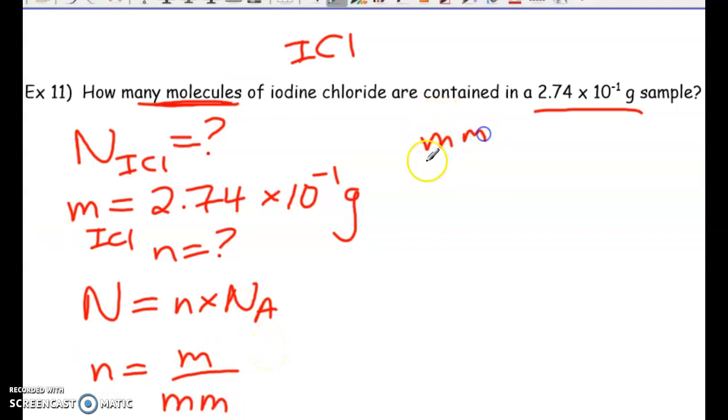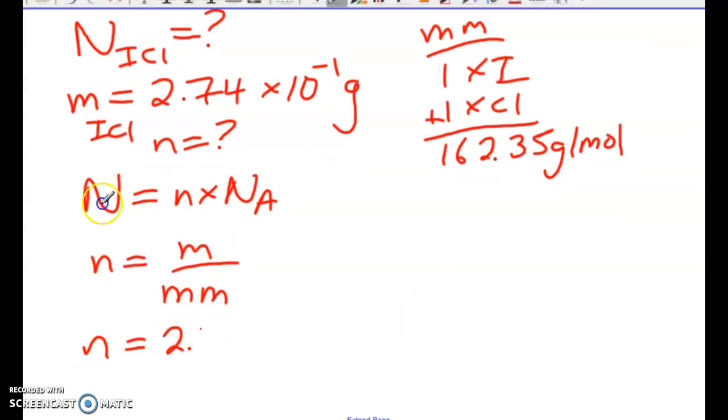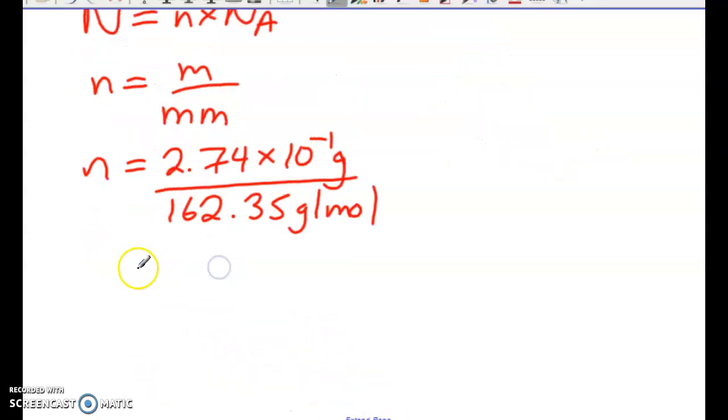So molar mass, we have 1 iodine, 1 chlorine. So we get a molar mass of 162.35 grams per mole. So we have mass over the molar mass. So we're going to solve for our mole value. So 2.74 times 10 to the negative 1, divided by 162.35. So we get here moles of 1.6877 times 10 to the negative 3 moles.